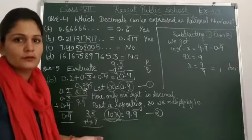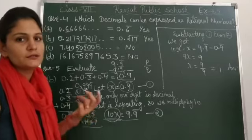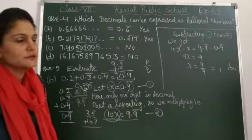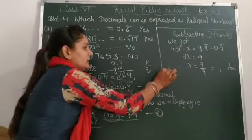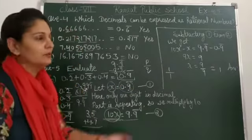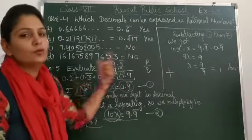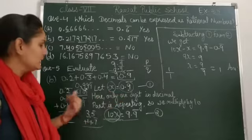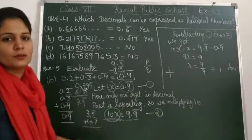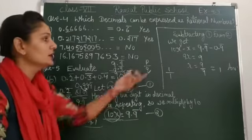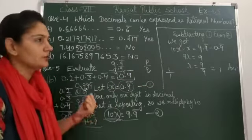1 is also a rational number. All integers, whole numbers and natural numbers are rational numbers. Below 1 we can write 1. This is in P upon Q form. So it is a rational number. You should be able to tell if it is rational number or not. 1 is also a rational number.